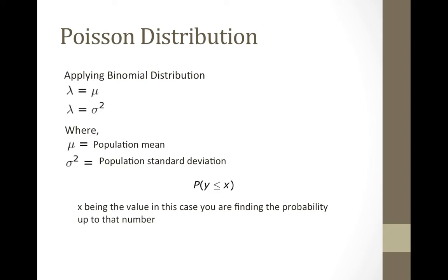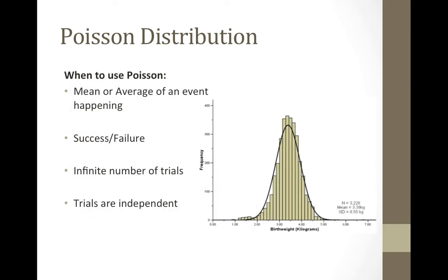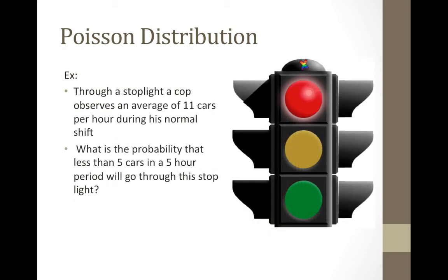Poisson distribution is generally easy to spot in your problem. Whenever a mean or average of an event is given in this problem, it is a direct link to Poisson. Similar to binomial, if there are only two possible outcomes, success and failure, this is another sign of it being Poisson. There are an infinite number of trials, and trials are independent.